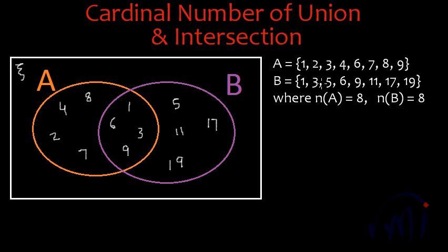Set A has eight elements: 1, 2, 3, 4, 6, 7, 8, and 9. Set B also has eight elements: 1, 3, 5, 6, 9, 11, 17, and 19. So the cardinal number of A, N(A), is equal to 8, and the cardinal number of B, N(B), is also equal to 8.